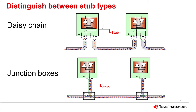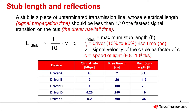The junction box approach can also work well, but ideally the stub length should be minimized to reduce reflection. In cases where the stub length cannot be reduced to a reasonable length, the data rate may need to be slowed down in order to reliably communicate. This is a general rule of thumb, not a firm rule. The maximum acceptable stub length can be calculated using the equation provided.